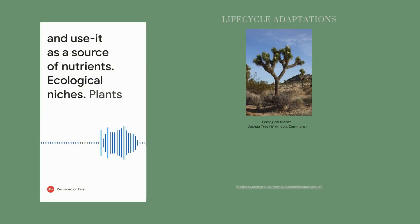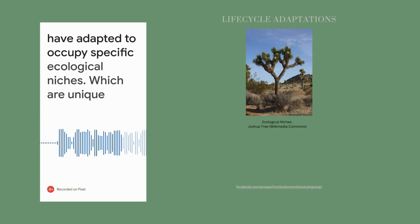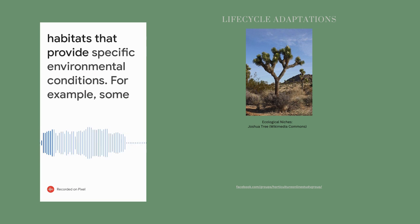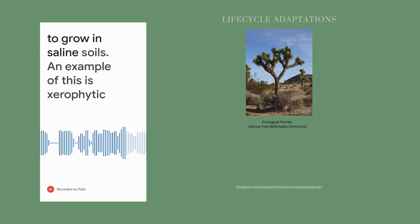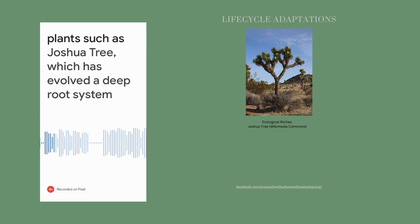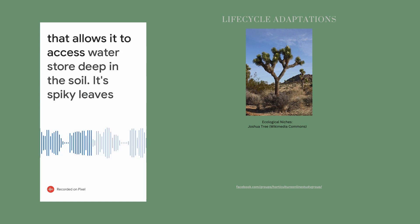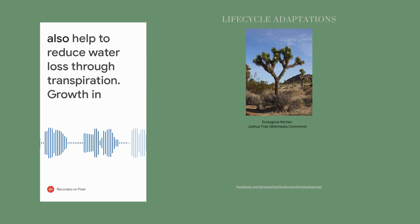Ecological niches. Plants have adapted to occupy specific ecological niches, which are unique habitats that provide specific environmental conditions. For example, some plants have adapted to grow in acidic soils, while others have adapted to grow in saline soils. An example of this is xerophytic plants such as the Joshua tree, which has evolved a deep root system that allows it to access water stored deep in the soil. Its spiky leaves also help to reduce water loss through transpiration.